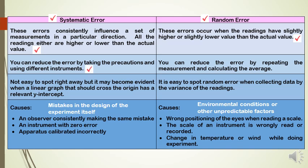You can reduce systematic error by taking precautions and using different instruments. Whereas you can reduce random error by repeating the measurement and calculating the average. It is not easy to spot systematic error right away, but it may become evident when a linear graph that should cross the origin has a non-zero y-intercept. It is easy to spot random error when collecting data by observing the variance of the readings.